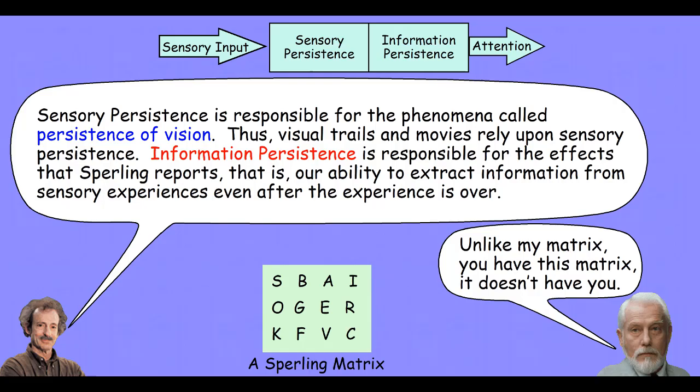Sperling proved his hypothesis with an experiment involving not free recall, but cued recall. In cued recall, the trial is similar — participants view the matrix for the same amount of time — however, instead of recalling any of the letters freely, they would hear a pitch corresponding to a different row in the matrix, and recall the letters from that row. On average, viewers were able to recall more during cued recall trials than free recall trials. Sperling then built upon this to determine the amount of time before information was discarded from a person's iconic memory.